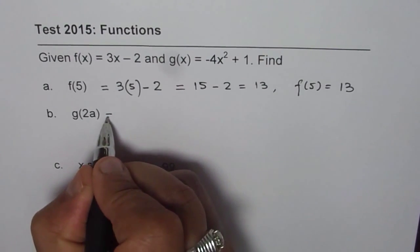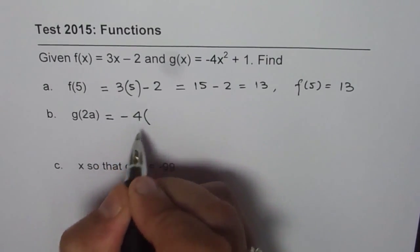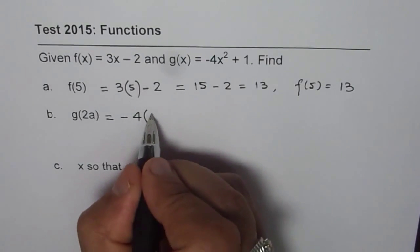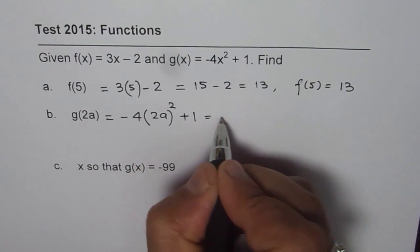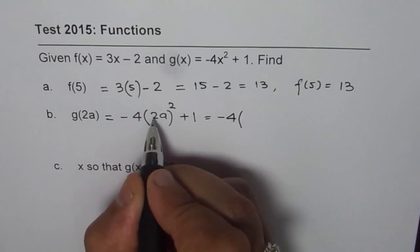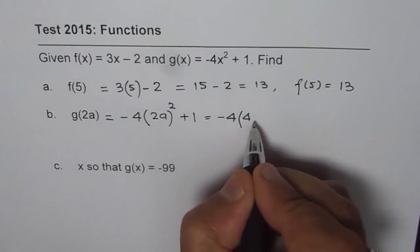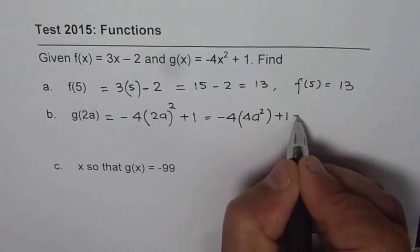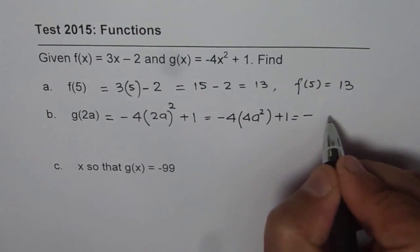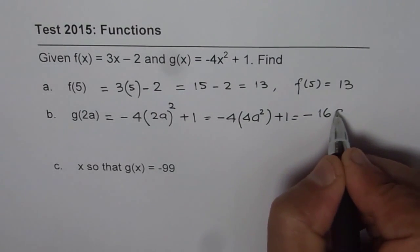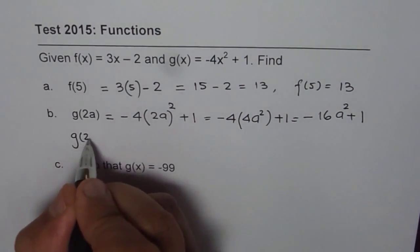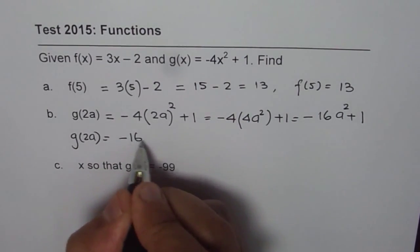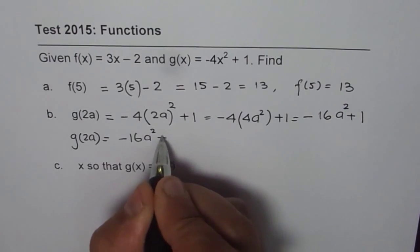So g(2a) will be equal to -4 times (2a)² + 1, and that gives you -4 times 4a² + 1. Open the bracket: -16a². So that is what g(2a) is. So we can write down g(2a) = -16a² + 1.